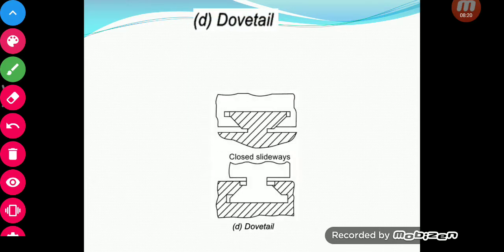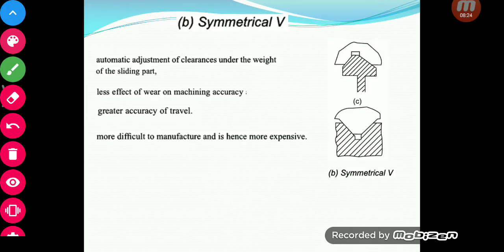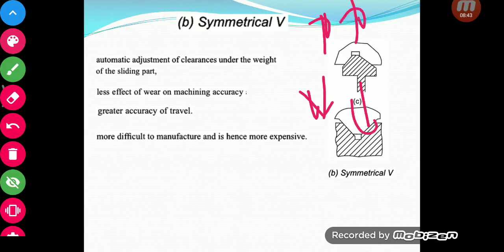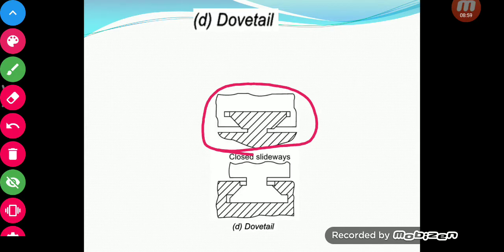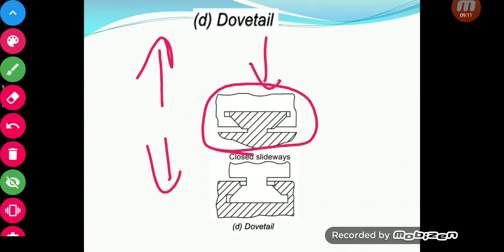Up till now what we were seeing were mostly open-type slideways. An open-type slideway is one in which if there is a separating force, the slideway and the saddle which rides on it can get separated. There is another type called a closed-type slideway, which has much more resistance to deforming forces in multiple directions — even if forces try to take the slideways apart or bring them close together, it has resistance.